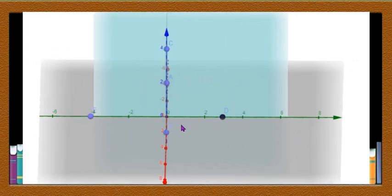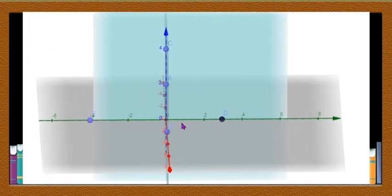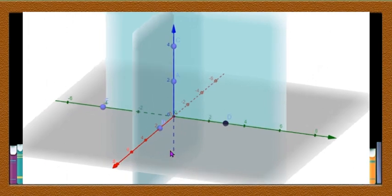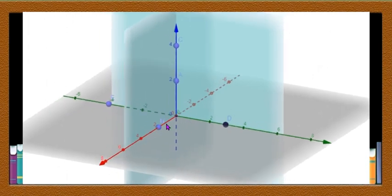The angle between XOX' and YOY' is 90 degrees. But if we take the side view, it seems to be more than 90 degrees. This angle is 90 degrees, and similarly the angle Y'OX' is also 90 degrees. The angle between XOZ and YOZ is also 90 degrees.